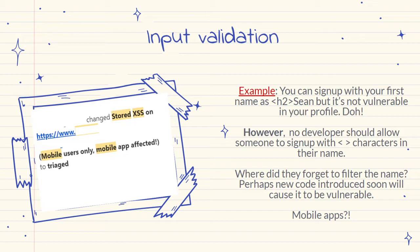I've given that example because I've actually had this — all the bugs I'm talking about are based on bugs I've actually found. I could sign up on a website with an XSS payload as my first and last name. It wasn't vulnerable throughout the desktop website at all. However, as soon as I opened up their mobile app, I started having alerts come up. So it affected literally just their mobile app. And there we have a bounty.